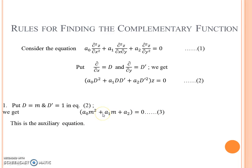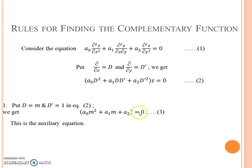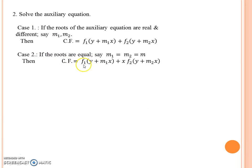If the roots of the auxiliary equation are real and distinct, say m₁ and m₂, then the complementary function is: CF = f₁(y + m₁x) + f₂(y + m₂x). If the roots are equal, then CF = f₁(y + m₁x) + x·f₂(y + m₂x).